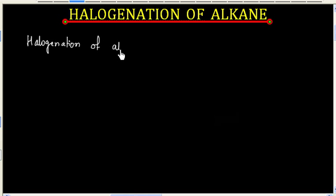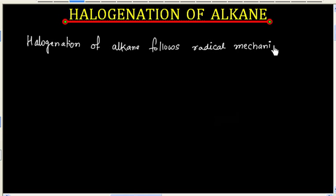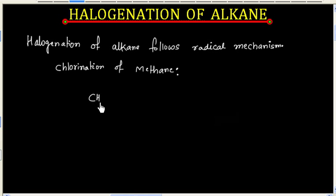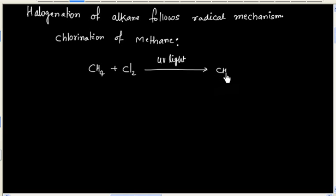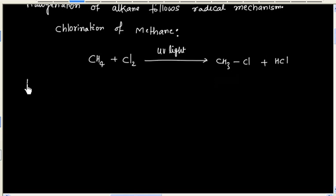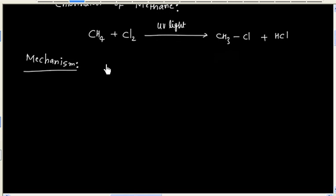Halogenation of alkanes follows a radical mechanism. Let us consider chlorination of methane. This reaction happens in the presence of UV light. We will now write the mechanism for this reaction, which follows a radical mechanism.